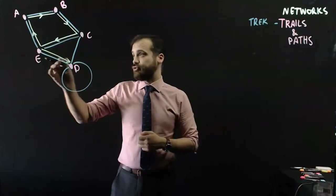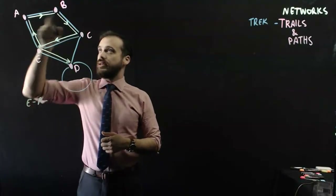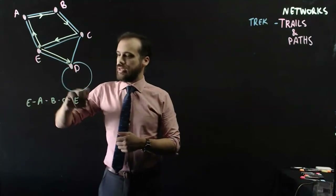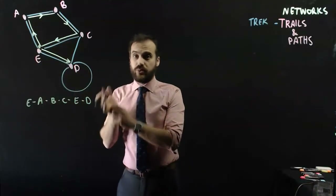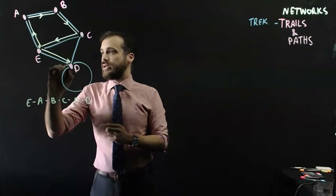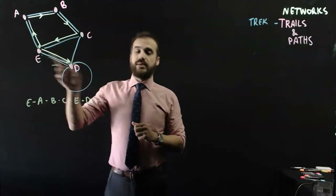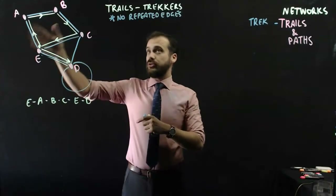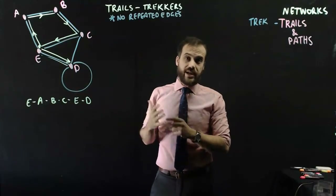Here's an example of a trail. Someone started at point E, then moved to point A, then to B, then to C, then to E, then to D. At no point did they walk on the same road twice. Now, if they were to walk from D back to E, this would no longer be a trail, because they've walked on the same road twice. In short, trails are for trekkers — no road gets walked down the same twice.